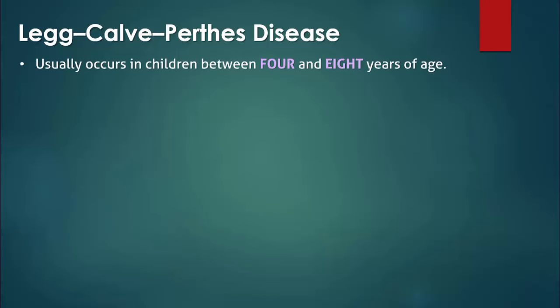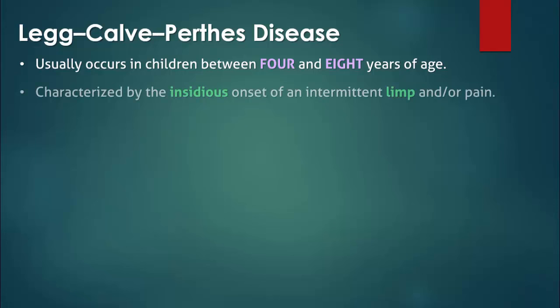Legg-Calvé-Perthes disease usually occurs in children between the ages of 4 and 8. These patients tend to be short in stature for their age and may have a delay in skeletal maturation. The most common presenting complaint is that of a painless limp of insidious onset. When pain is present, it can be felt in the hip or may be referred to the groin, thigh, buttocks, or knee.